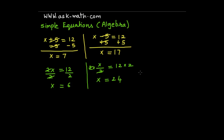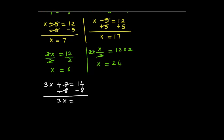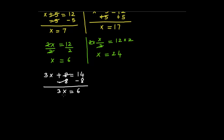From these two examples we conclude that whenever there is a multiplication, we do division, and whenever there is a division, we do multiplication. Now if I combine addition and multiplication both — suppose 3x plus 8 is equal to 14. Since we have plus 8 here, add negative 8 on both sides. So we will get 3x is equal to 6. To find the value of x, divide both sides by 3. So x is equal to 2.